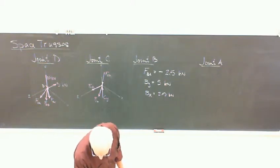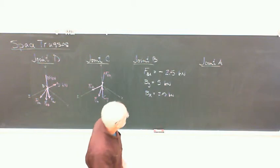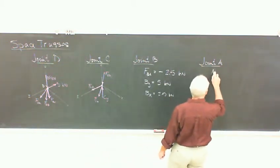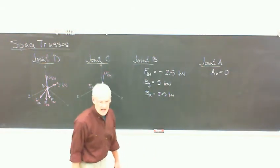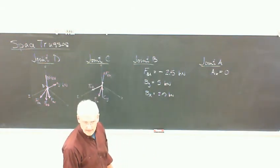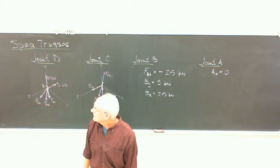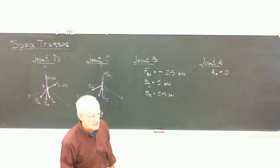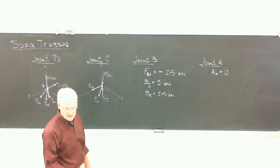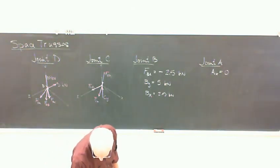And then joint A is the last one. And again, it's just a matter of setting these things up. Lots more is coming known as we go so they do get easier. You'll find AX equals zero. It's not a necessary support. Which makes sense. None of the load was in the X direction so why would we need any support in the X direction? So that one makes pretty good sense.